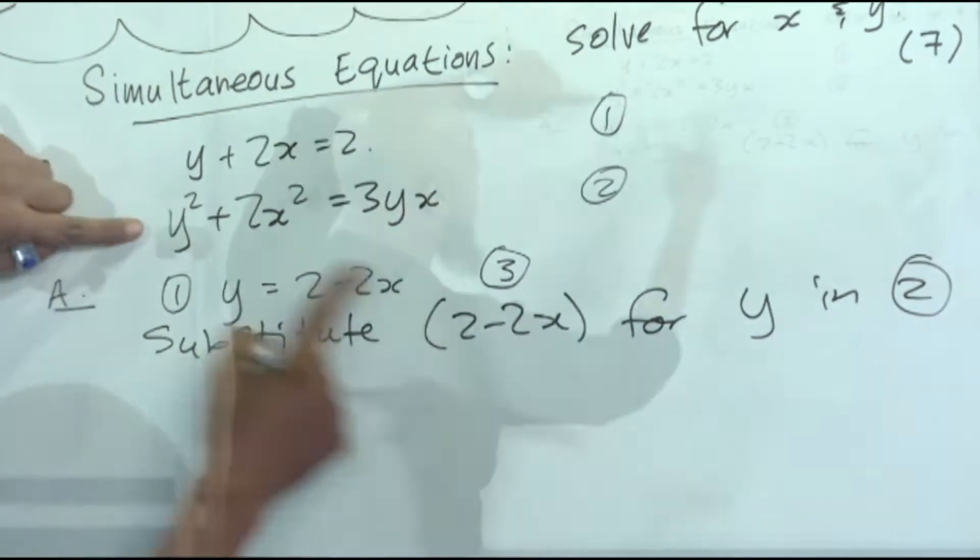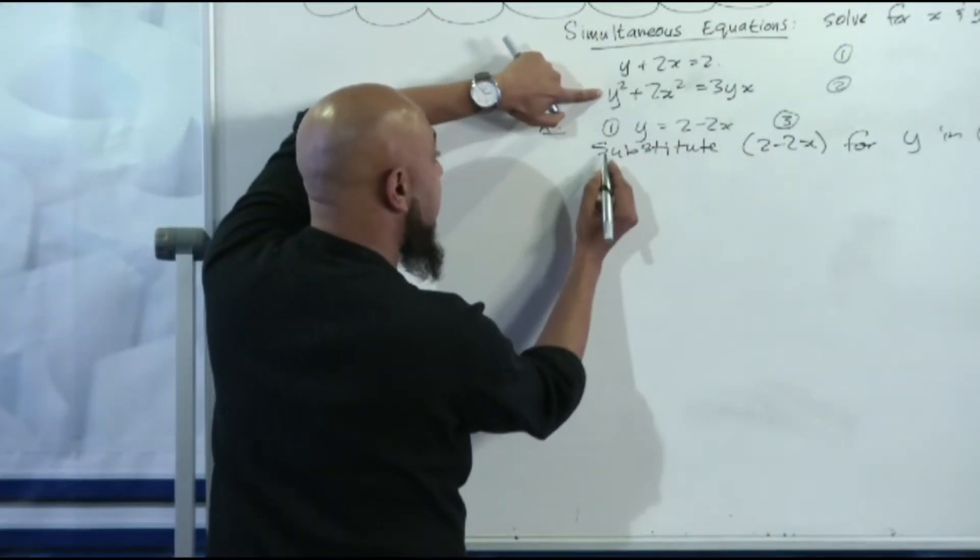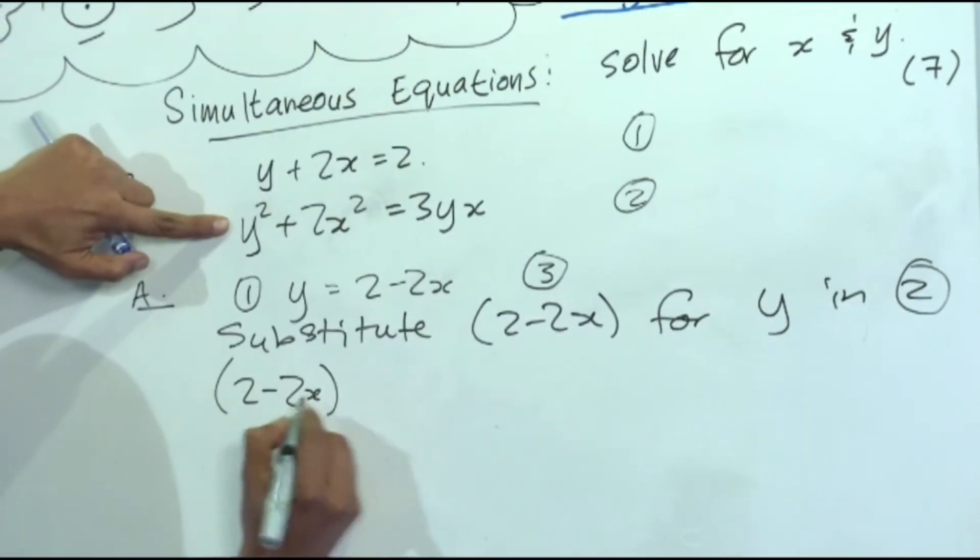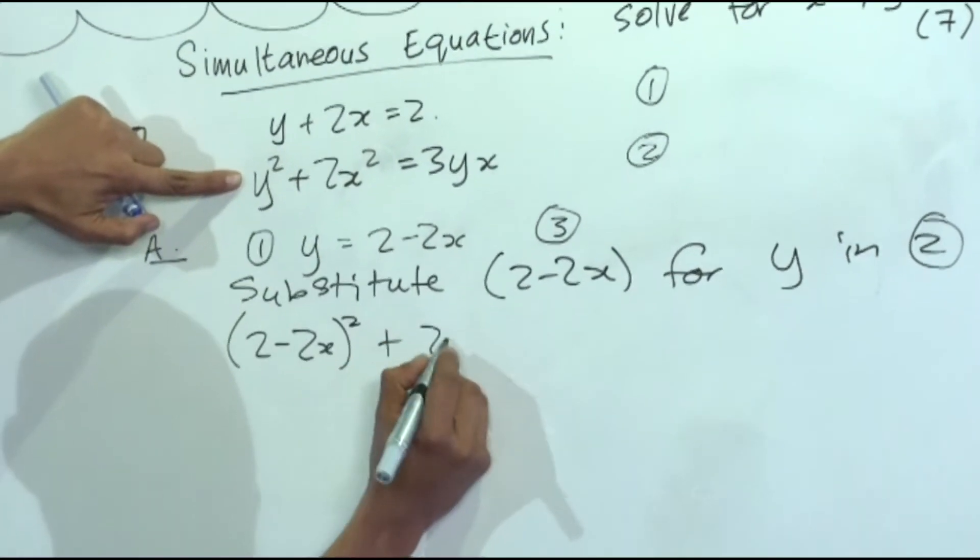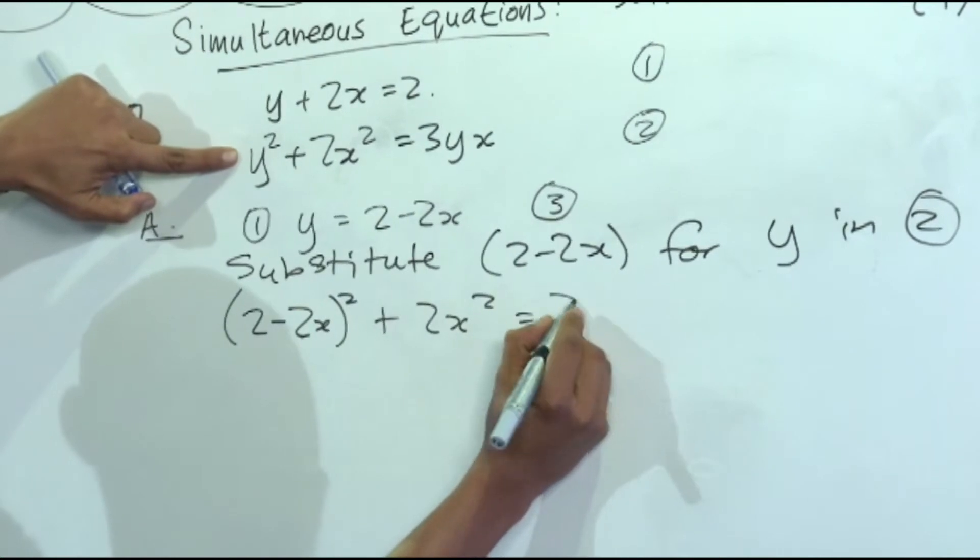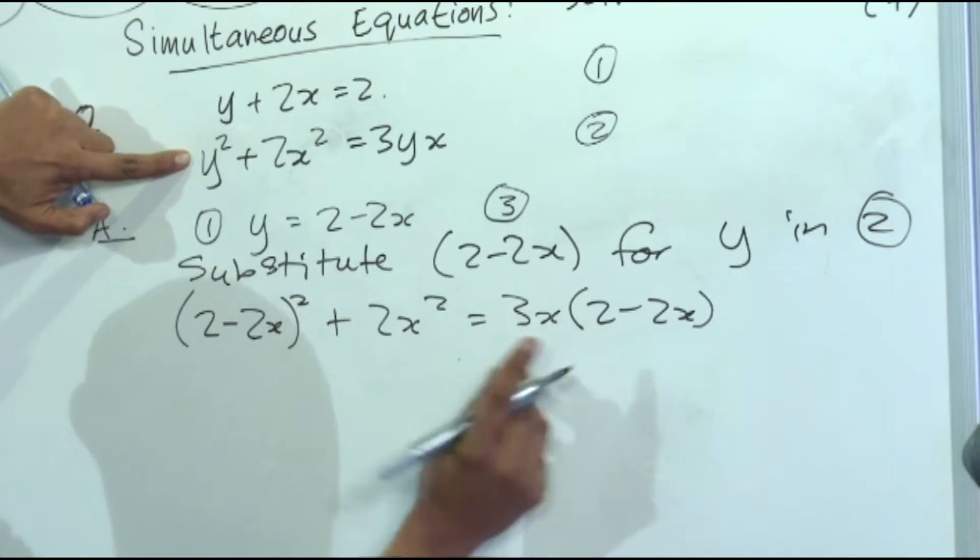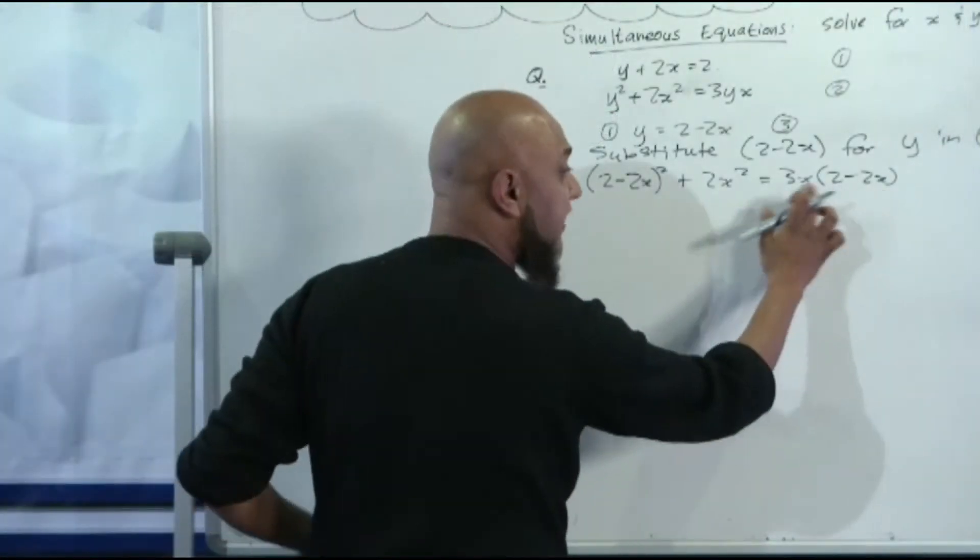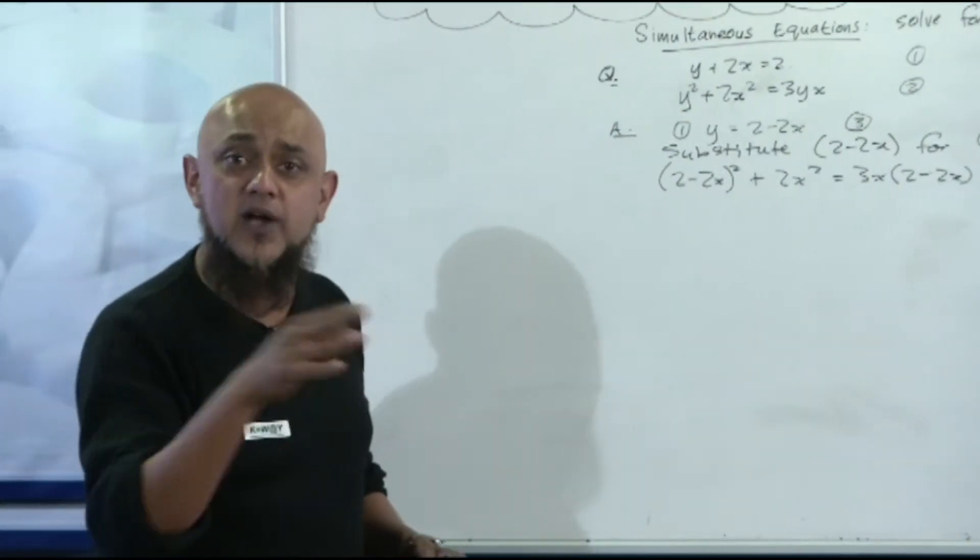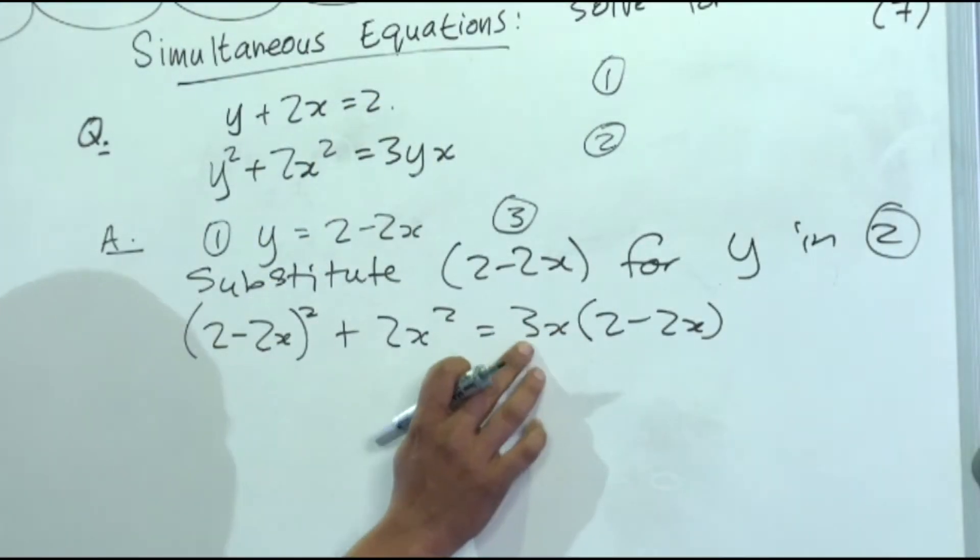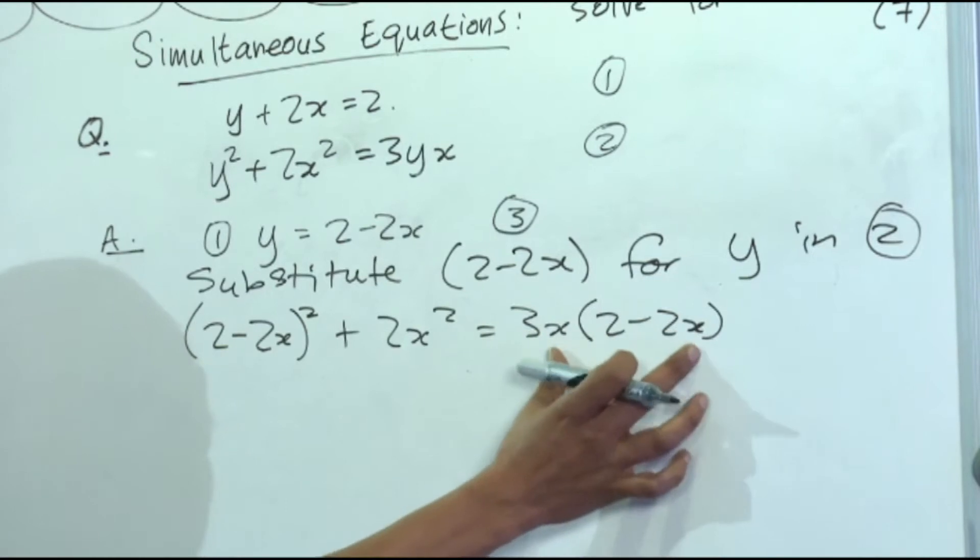So for every y, I'm going to put 2 minus 2x. So what do I have? I got (2 minus 2x) squared plus 2x squared is equal to 3x and y is 2 minus 2x. Now you might say, but this is y, and here you've got xy. We all know xy, yx, it's the same thing. Doesn't matter which one you put first. But we want to keep the term outside because we want to multiply it back into the brackets here.